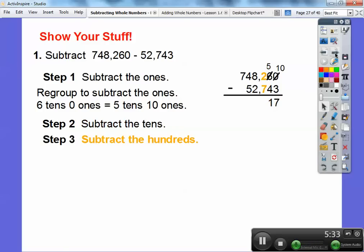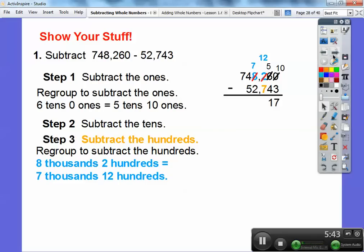Now let's subtract the hundreds. I've got to regroup again. 2 minus 7, I can't do it, so I'm going to borrow from this 8. Here's my 8,200. I'm going to borrow from this 8,000 and make it 7,000. Instead of 200 now, it's going to be 1,200.